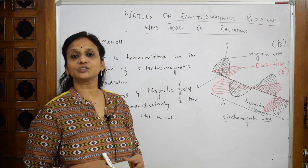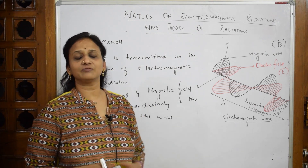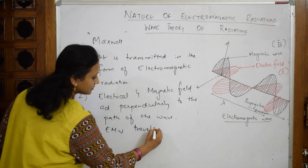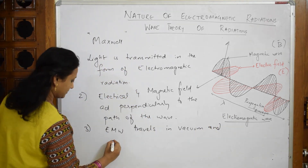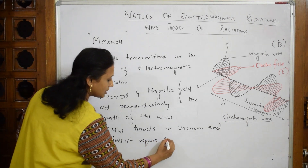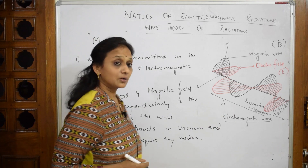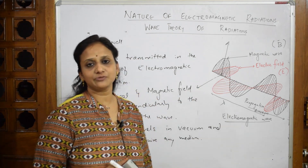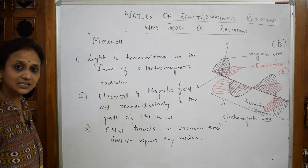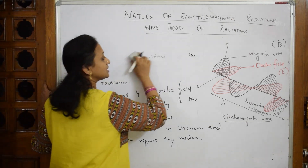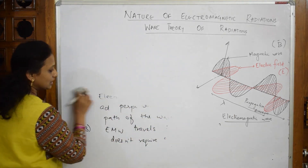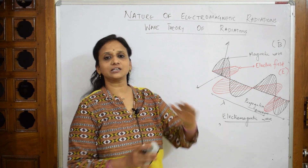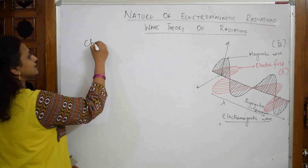Because both the electrical and magnetic fields are acting, we call this an electromagnetic wave. For this electromagnetic wave to travel, it does not require any medium — unlike sound waves. Even in vacuum the light wave travels. So electromagnetic wave travels in vacuum and does not require any medium. Apart from Maxwell's postulates, we are also going to study the different characteristics related to the wave.